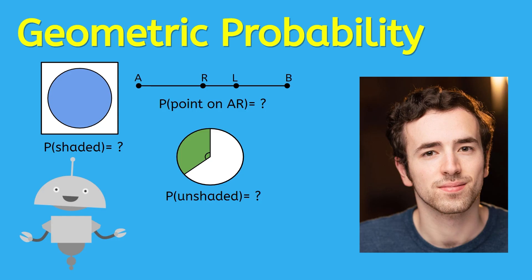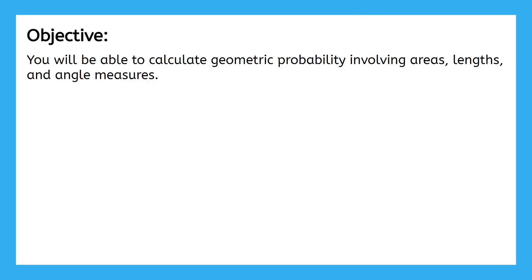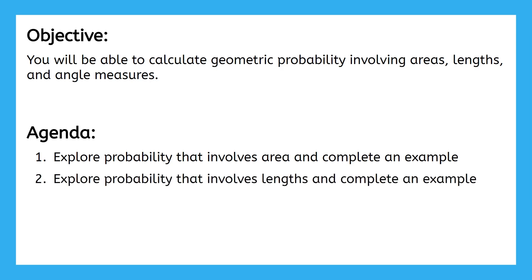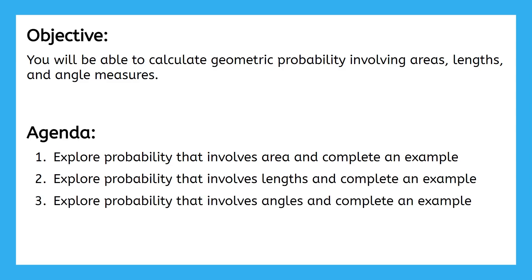When you think of geometric probability, think of areas, lengths, and angles, which are all topics that you've already learned about in this course. By the end of this lesson, you will be able to calculate geometric probability involving areas, lengths, and angle measures. First, we'll explore probability that involves area and complete an example. Next we'll explore probability that involves lengths, and then we'll explore probability using angles and complete one final example.